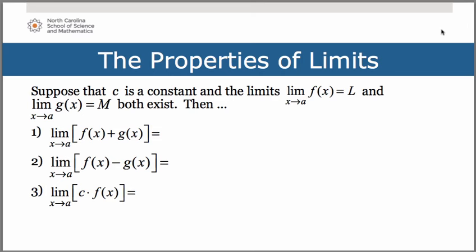So suppose that c is a constant and the limit of f of x as x approaches a equals L and the limit of g of x as x approaches a number a is equal to M both exist. Then the limit of the sum of f of x and g of x as x approaches a simply is the sum of the limit of each of those individual functions. Therefore, we have simply L plus M.